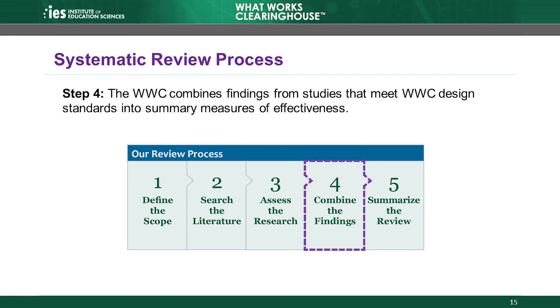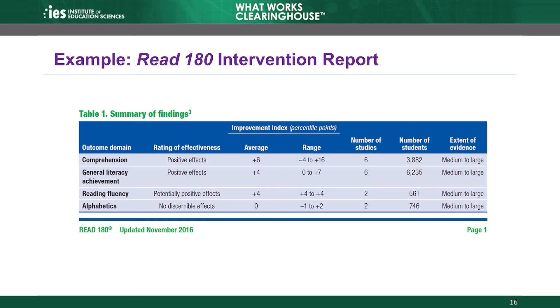After assessing the research, we combine the findings from reviews of individual studies to summarize what was learned about the effectiveness of the intervention. Because studies can report findings from multiple outcomes or samples, combining findings occurs both within a study and across studies. We describe the magnitude of findings related to the effectiveness of the intervention, the amount of supporting evidence, and the ability to generalize findings. Returning to the Read 180 example, the WWC summarized the findings from the 9 studies that meet WWC design standards. These included findings in each of the 4 eligible outcome domains in the review protocol. The reporting module, which is module 7, discusses how the WWC combines and summarizes findings in more detail.